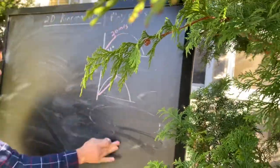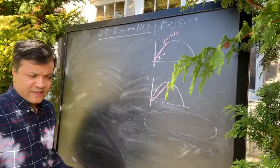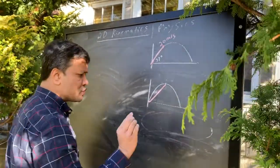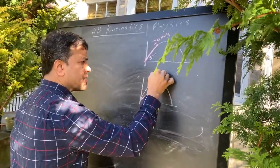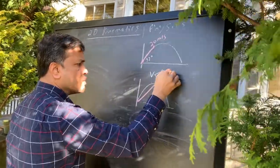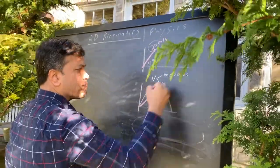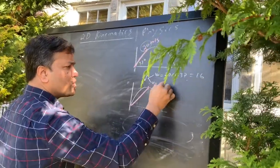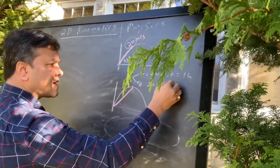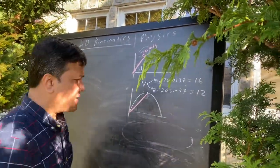But before I do that, I want to use the traditional way to find the magnitude of this red line. You're going to find the two velocity components: Vx and Vy. Vx is 20 cosine 37, which gives you 16. And Vy is 20 sine 37, which gives you 12.